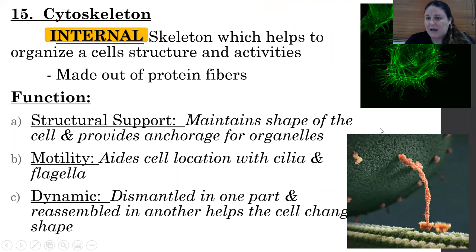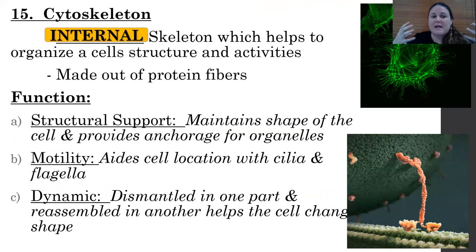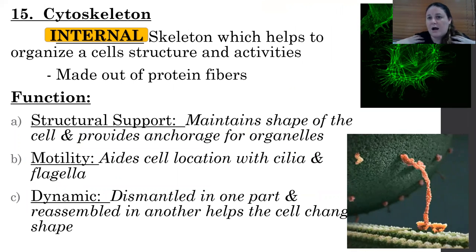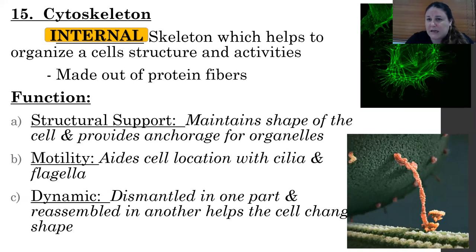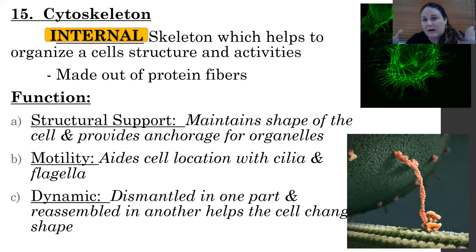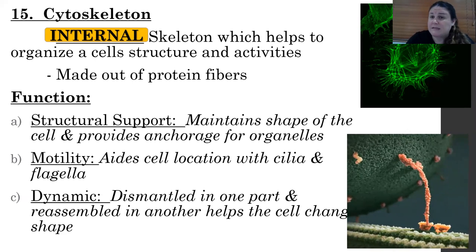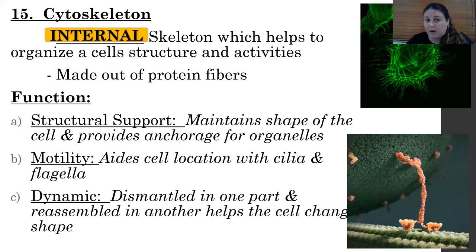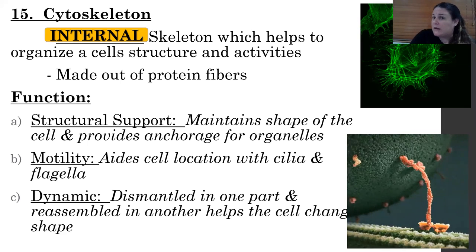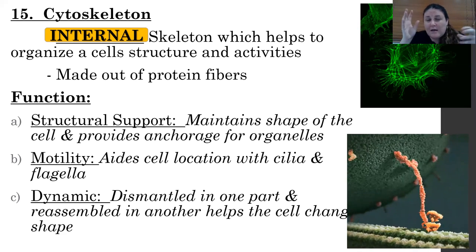The cytoskeleton is an internal skeleton that helps cells organize structures and activities. It's a network made out of different protein fibers and is found in eukaryotic cells. It provides structural support and maintains cell shape, can anchor organelles, and contributes to motility. Things like cilia — little hairs — and flagella — a whipping tail — can aid in locomotion. It can also be dismantled in one part and reassembled in another to help the cell change shape, like amoebas moving with pseudopods.